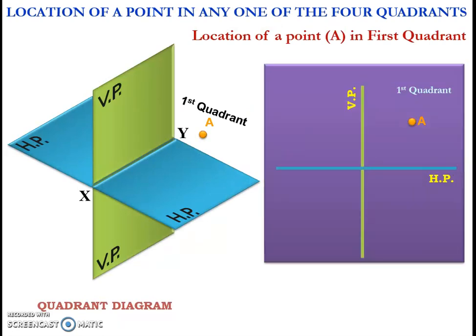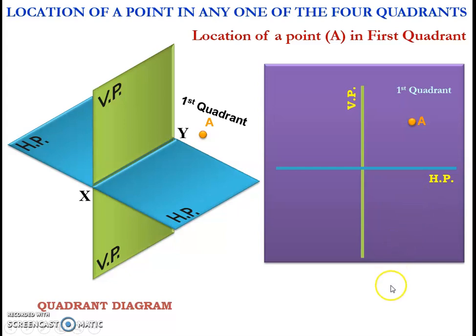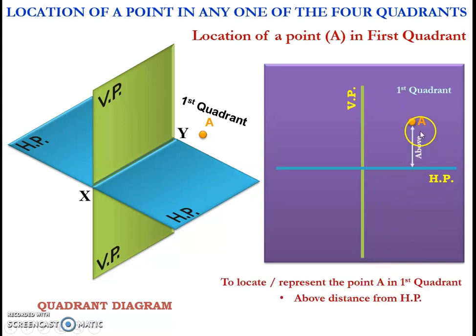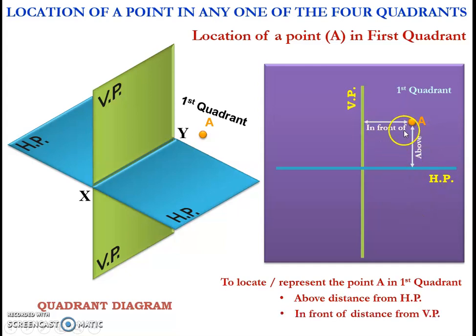Now we move on to the first case: location of a point in any one of the four quadrants. Let us consider point A which is in the first quadrant. To locate point A which is in the first quadrant, we need the above distance from the horizontal plane and the in-front-of distance from the vertical plane.